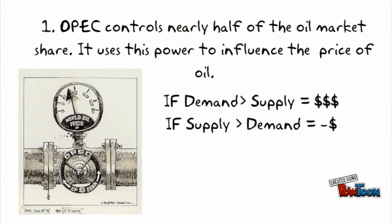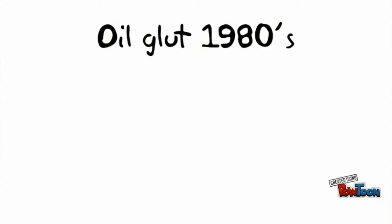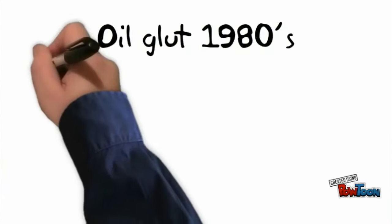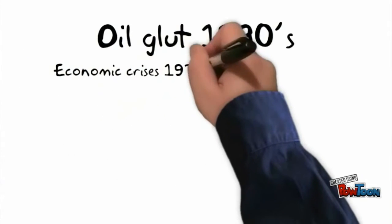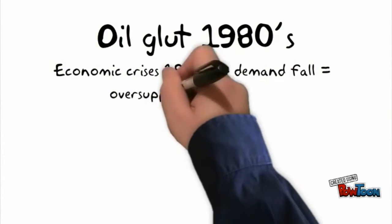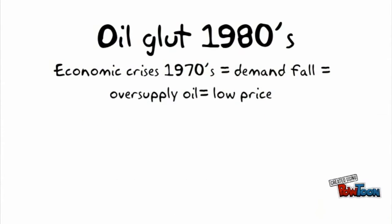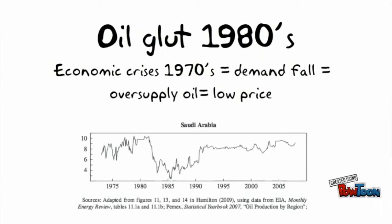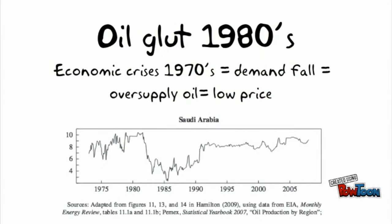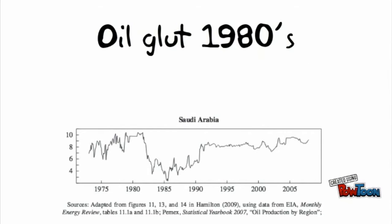A good example of how OPEC employed these tactics was in the 1980s oil glut, when after economic crises in the late 1970s, global oil demand fell while supply stayed the same, which caused a drop in oil prices. To bring it back up again, Saudi Arabia and other OPEC members cut supply, as shown in the graph.